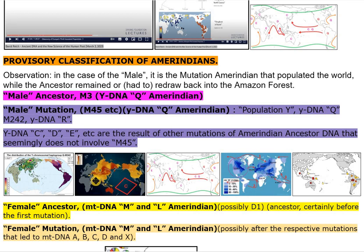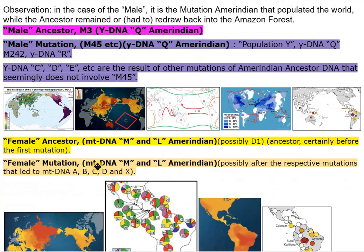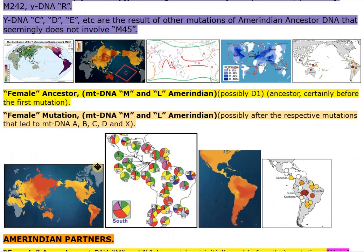Female ancestor: MTDNA-M and L Amerindian, possibly D1 ancestor, certainly before the first mutation. Female mutation: MTDNA-M and L Amerindian, possibly after the respective mutations that led to MTDNA-A, B, C, D, and X.